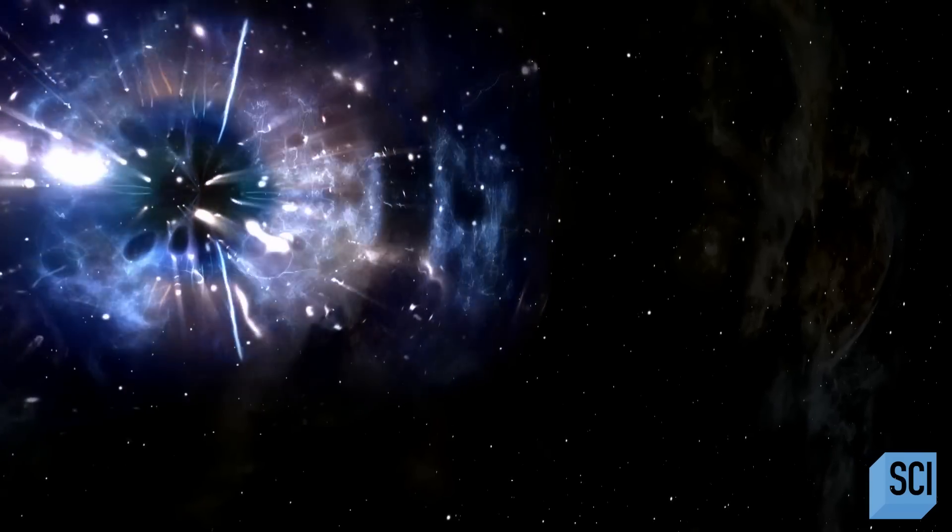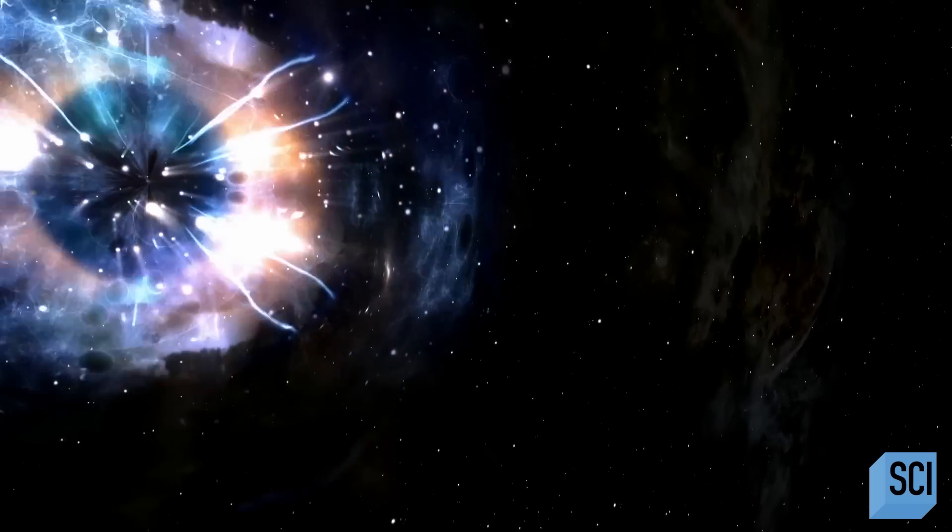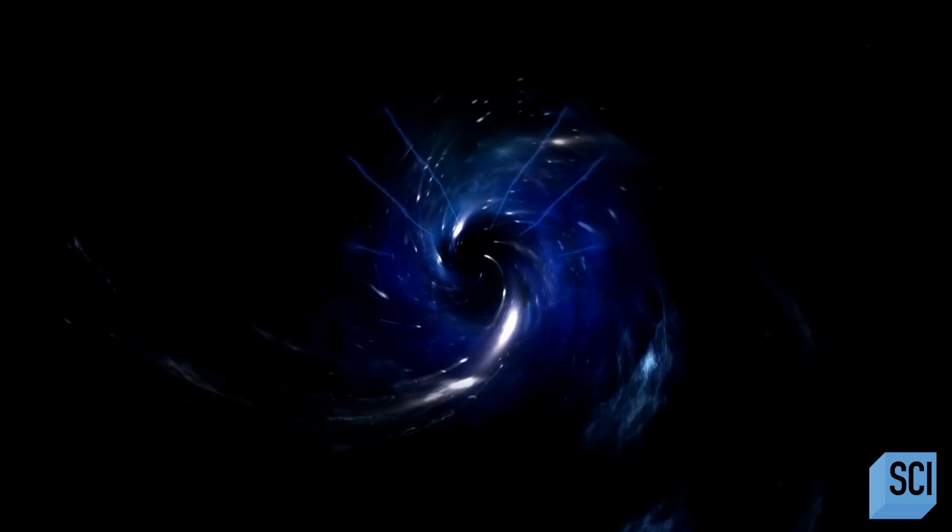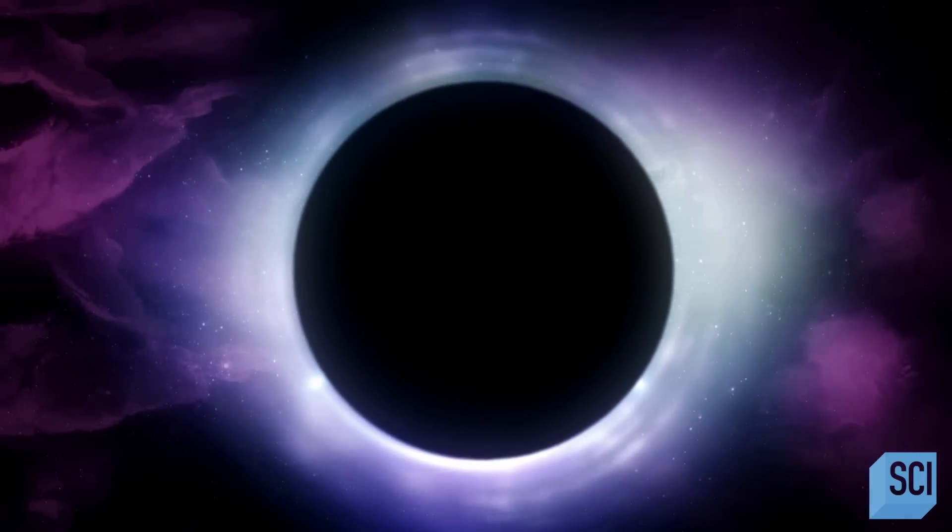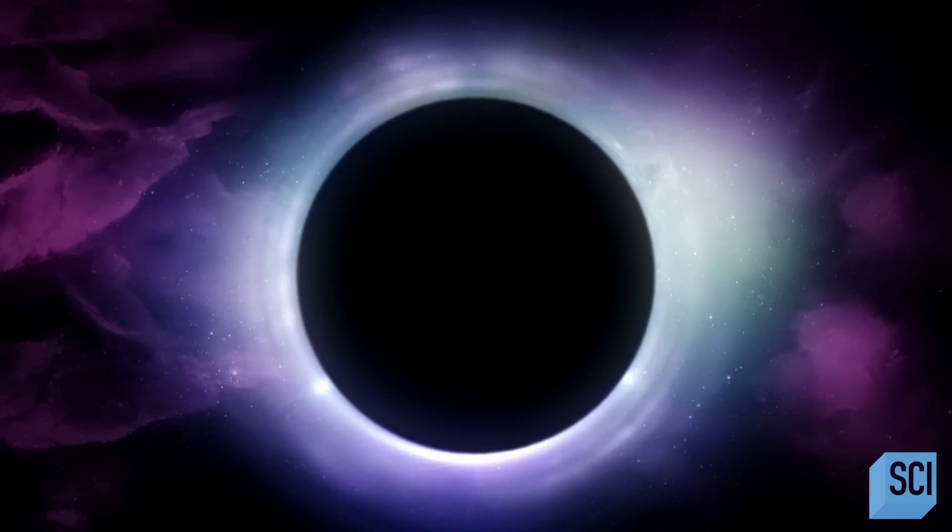Experts instead look to the theoretical science of how black holes work. They're thought to have the super dense collapsed core of a star at their center. Around this is a sphere known as the event horizon, a place where the rules of physics go out the window.